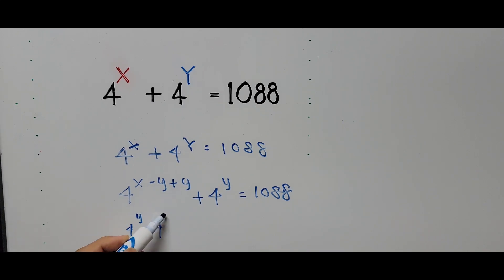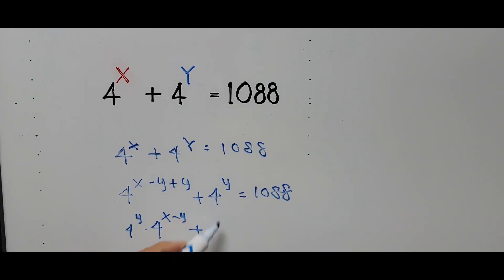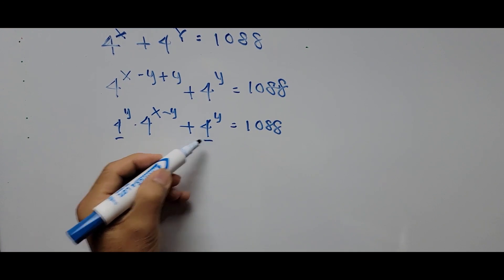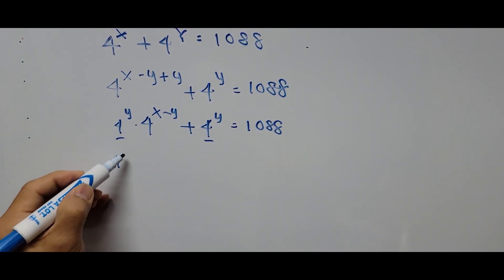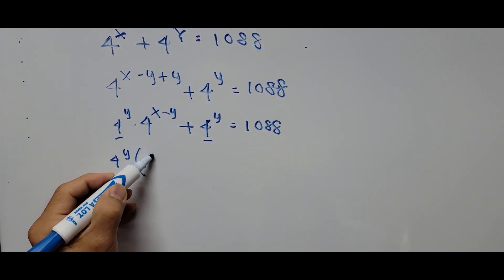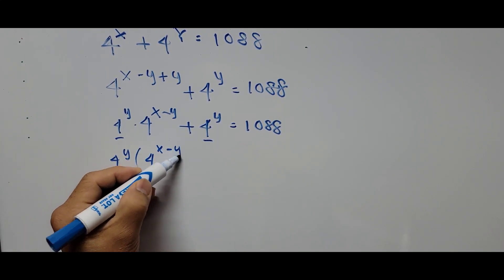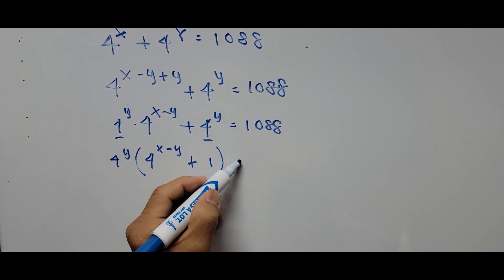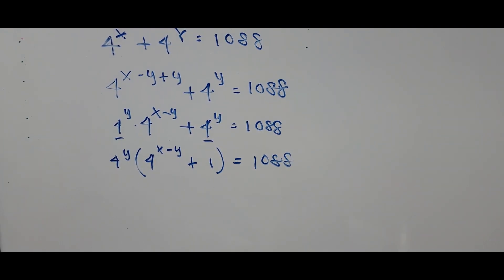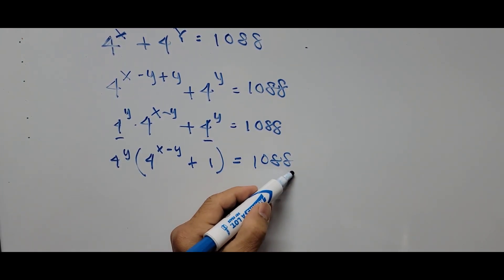Simplifying, this becomes 4 to the power of Y times 4 to the power of (X minus Y), plus 4 to the power of Y equals 1088. Factoring out 4 to the power of Y, we get: 4 to the power of Y times the quantity (4 raised to the power of X minus Y plus 1) equals 1088.